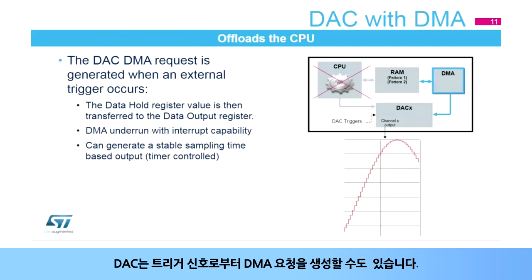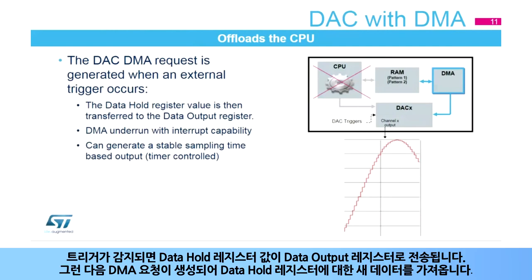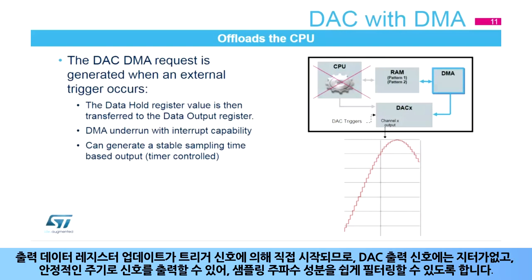The DAC can also create DMA requests from the trigger signal. Once a trigger is detected, the data hold register value is then transferred to the data output register. Then the DMA request is generated to obtain the new data for the data hold register. As the update of the output data register is initiated directly by the trigger signal, the DAC output signal will not have jitter, so that it can create a stable sampling time signal output, making it easy to filter out the sampling frequency.